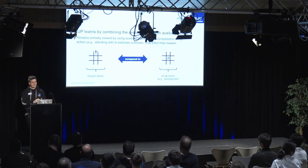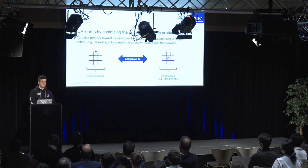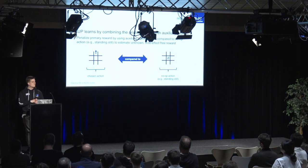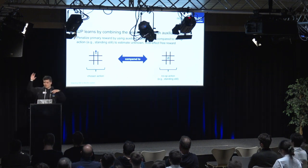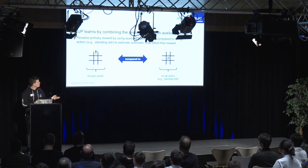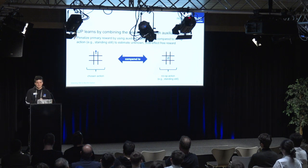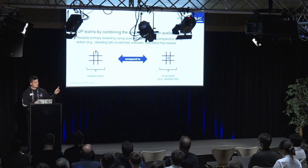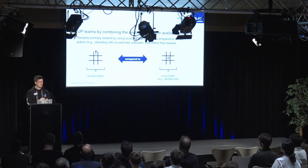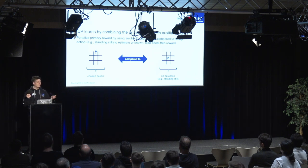AUP achieves this by combining auxiliary goals with the primary objective. We compare our chosen action in the auxiliary world to the no-op action — in other words, how much better is my chosen action than doing nothing? We then use this information to penalize the primary reward function and get an estimate of the unknown side-effect-free primary reward function.